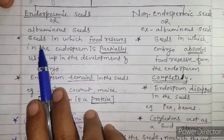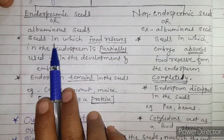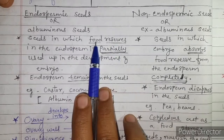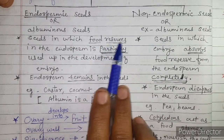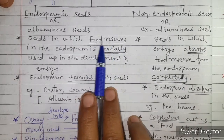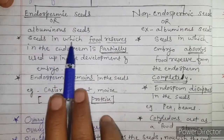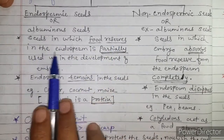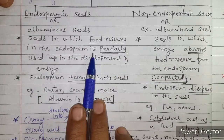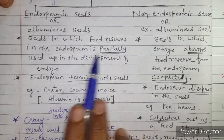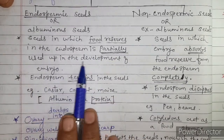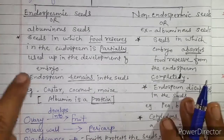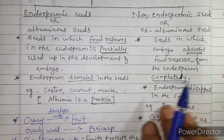Next point: in endospermic seeds, the food reserves in the endosperm are only partially used up in the development of the embryo — partially used up.